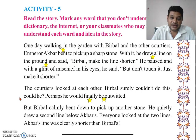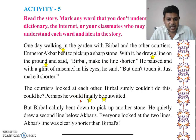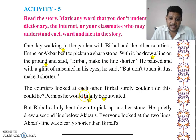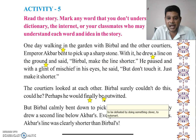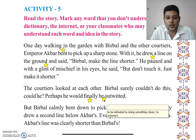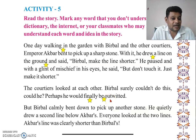Perhaps he would finally be outwitted. So the Birbal surely couldn't do this — could he? 'Finally' means 'at last.' 'Be outwitted' means to be defeated by something clever, or to be outsmarted — जिसे कहते हैं चतुराई में मात देना, चतुराई से किसी को हरा देना — उसे कहते हैं 'outwitted.' So perhaps he would finally be outwitted.